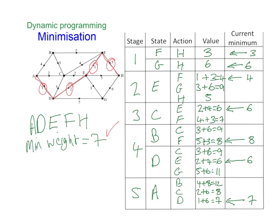That's how we solve a minimization problem. To solve a maximization problem I would do exactly the same thing, but rather than highlighting that 4 at vertex E, I would have highlighted the 9. That will obviously then change all my values later on. You might want to have a go starting with the same situation but maximizing it instead. Thanks very much for joining me — I'll see you next time.